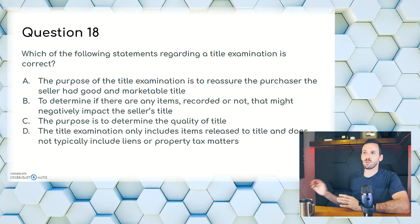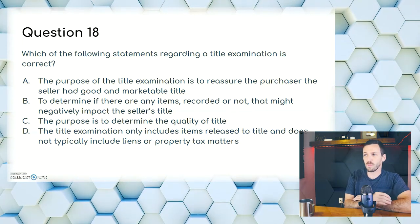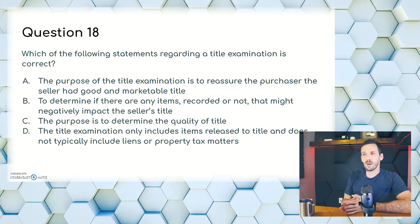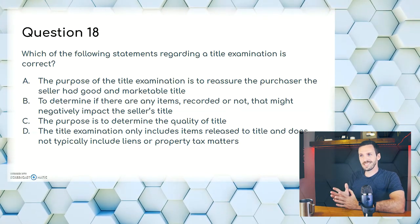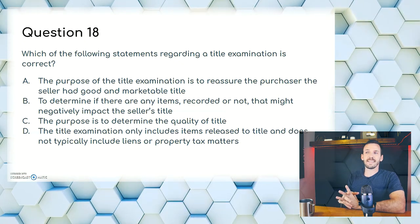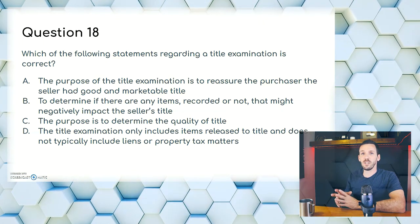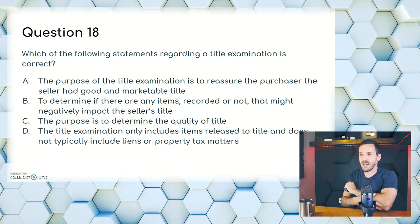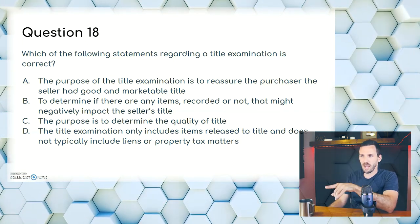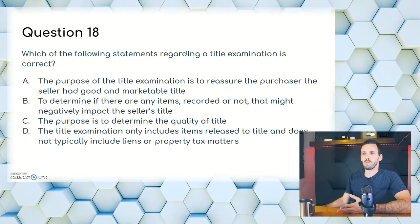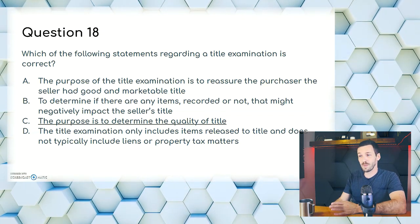Question eighteen: which of the following statements regarding a title examination is correct? A, the purpose is to reassure the purchaser the seller had good and marketable title; B, to determine if there are any items recorded or not that might negatively impact the seller's title; C, the purpose is to determine the quality of title; or D, the title examination only includes title-related items and not liens or property tax matters. Personally A, B, and C all seem correct, but C is the answer per the book. The 'recorded or not' clause in B probably hurts that answer. Answer is C.